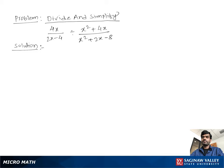Divide and simplify. 4x over 2x minus 4 divided by x square plus 4x over 2x square plus 2x minus 8.